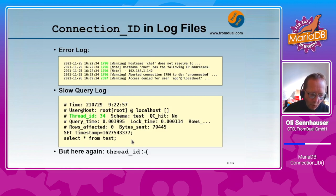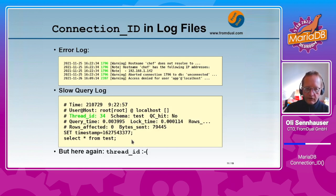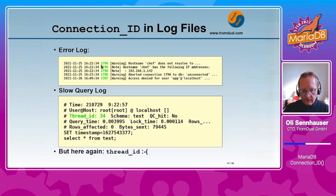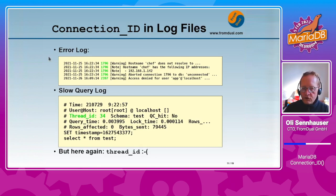Where can we find the connection ID in the log files? In the MariaDB error log the connection ID is also listed — it's here at the second position. This is the connection ID of your MariaDB connection, so you can easily find out which connection caused a particular MariaDB error log warning.